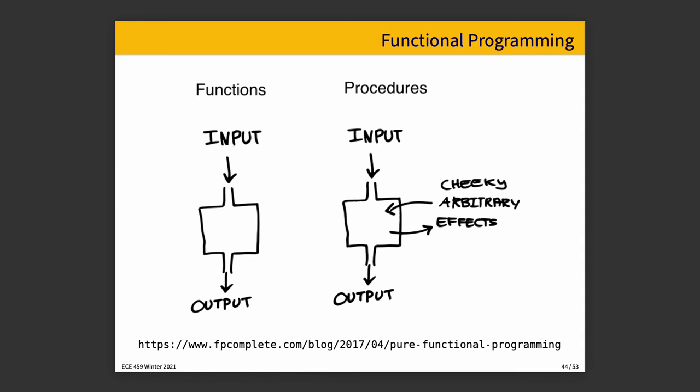And basically, if we have purely functional code, then it resembles the thing on the left where there's input and there's output, and whatever happens in the middle remains in there. If we have procedural programs, C is a procedural programming language, there are potentially arbitrary side effects, and Rust is really no different in this regard.